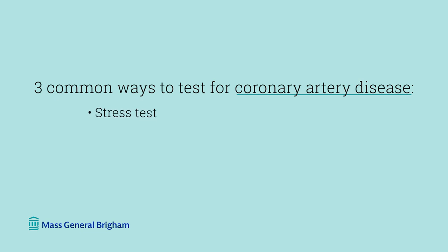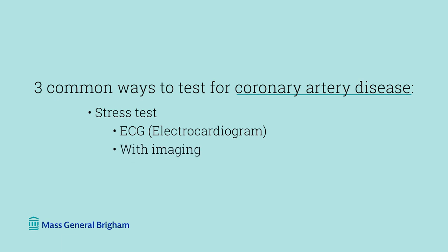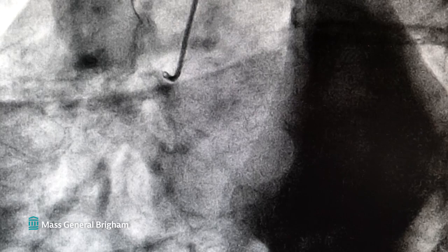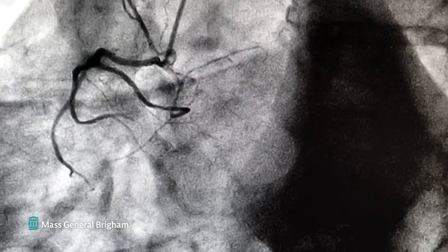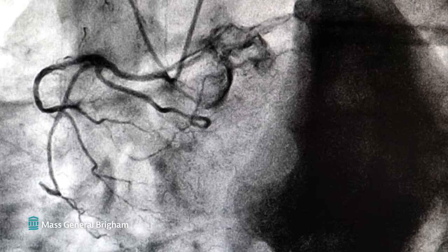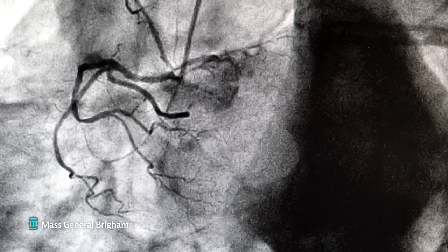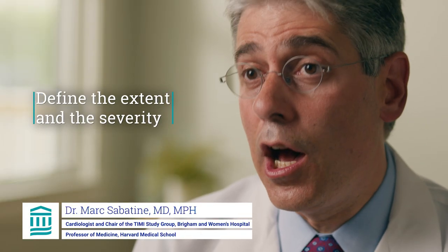How do we test for coronary artery disease? The most common test we do is a stress test, and we can either do that just by monitoring the patient's ECG or electrocardiogram. Sometimes we add special imaging where we can see if there's inadequate blood flow to the heart muscle itself. Another type of test is doing a CAT scan looking at the coronary arteries. If any of those first three tests suggest significant coronary disease, then we'll typically bring the patient to the cardiac catheterization lab where we maneuver catheters into the coronary arteries, inject a special dye, take a series of x-rays, and make a movie of the dye moving down the artery to see any blockages and define their extent and severity.